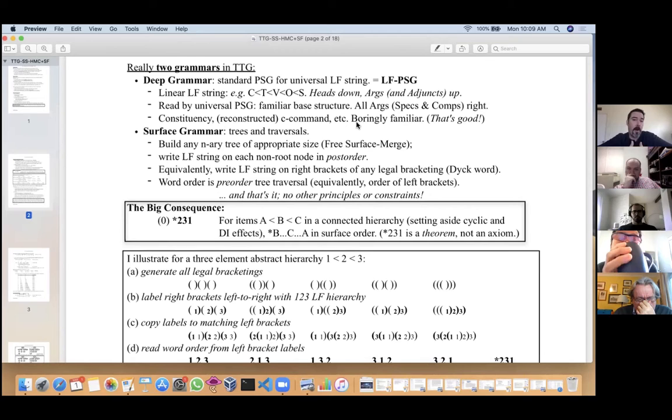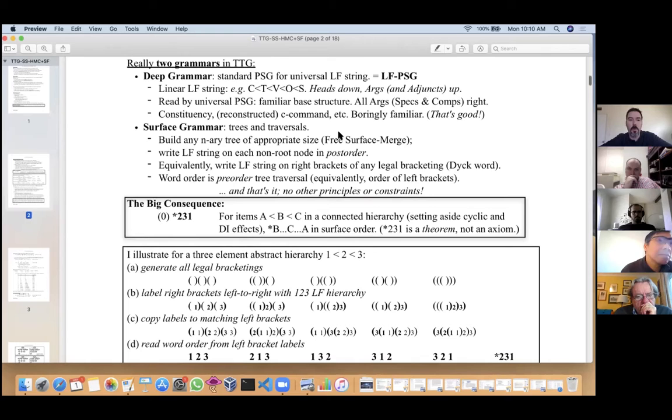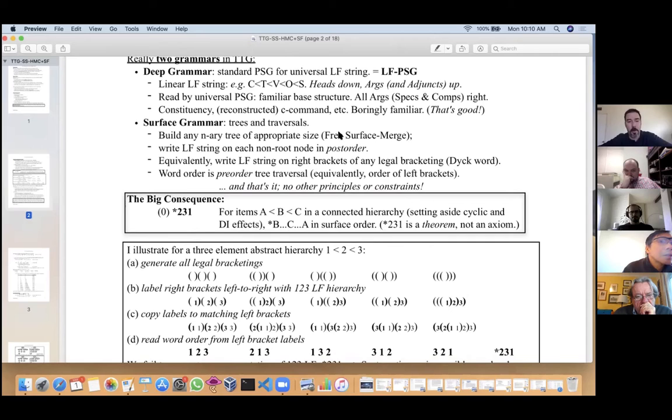What's new and different here is the surface grammar, which is about trees and traversals. There's an equivalent formulation over bracketed strings. This is really different—the trees we don't use in the way we normally use syntactic trees. The trees aren't binary branching; in fact, they're n-ary branching. You can have 14-ary branching on top of ternary branching and unary branching—any rooted non-tangling tree, any Dyck tree.